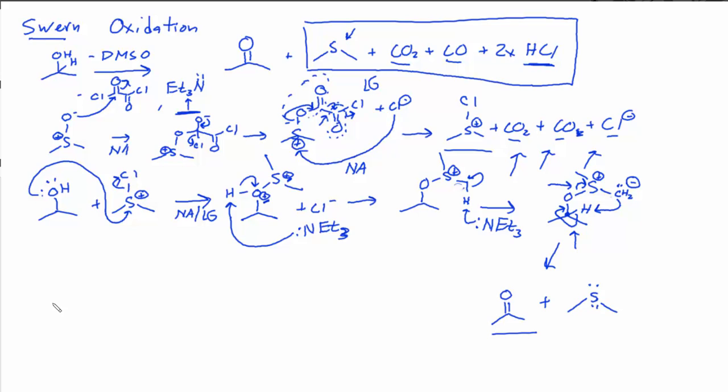And it can be used to take primary alcohols and oxidize them only to the aldehyde functional group. So you could write Swern. It's probably better to write out all of the ingredients, DMSO, oxalyl chloride, and triethylamine.